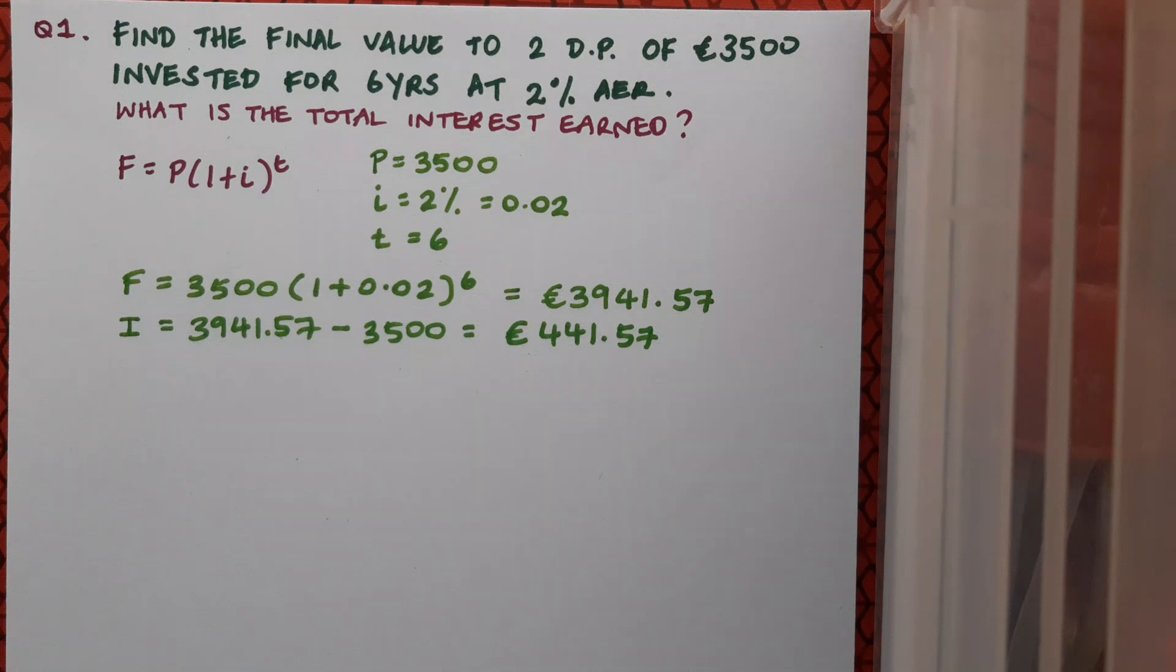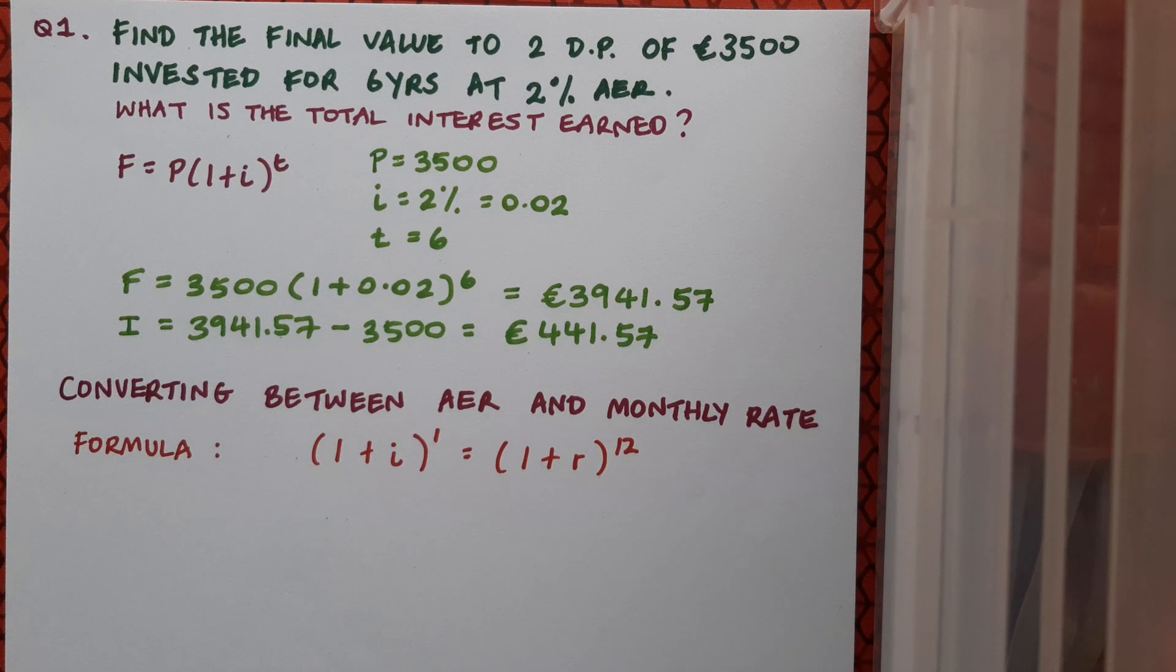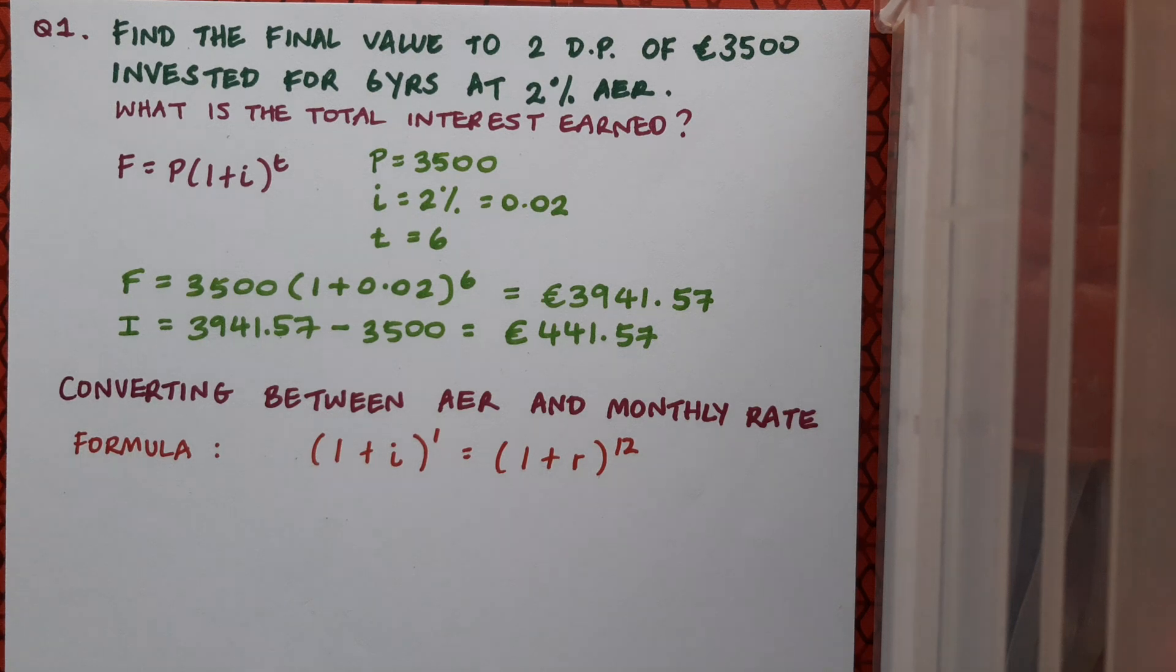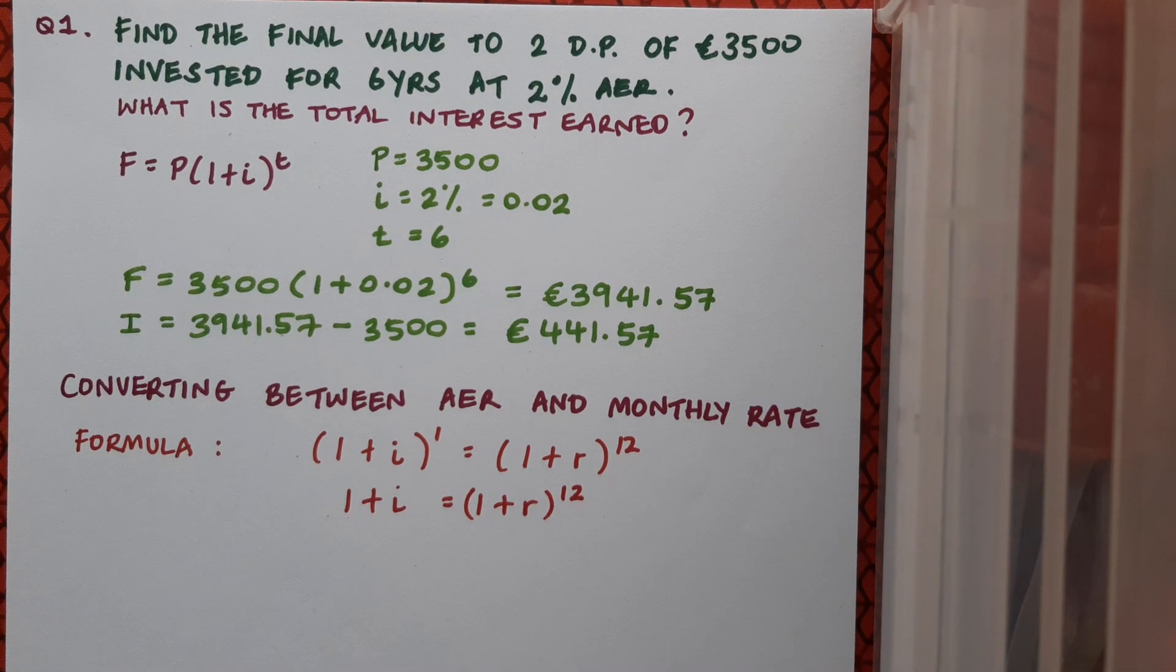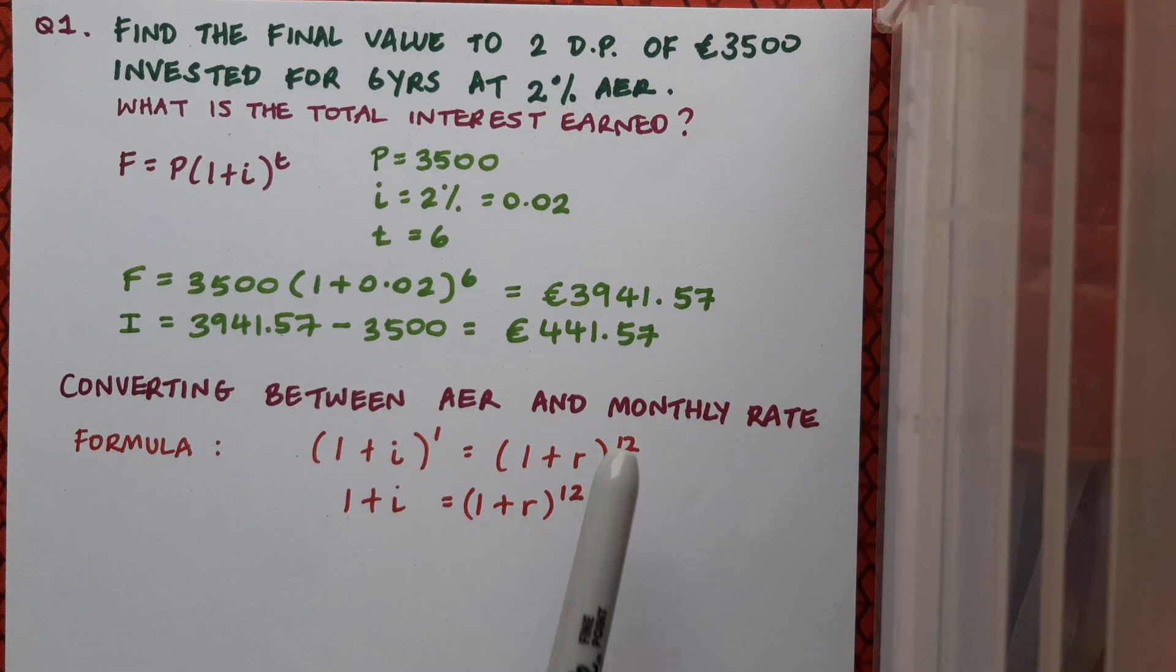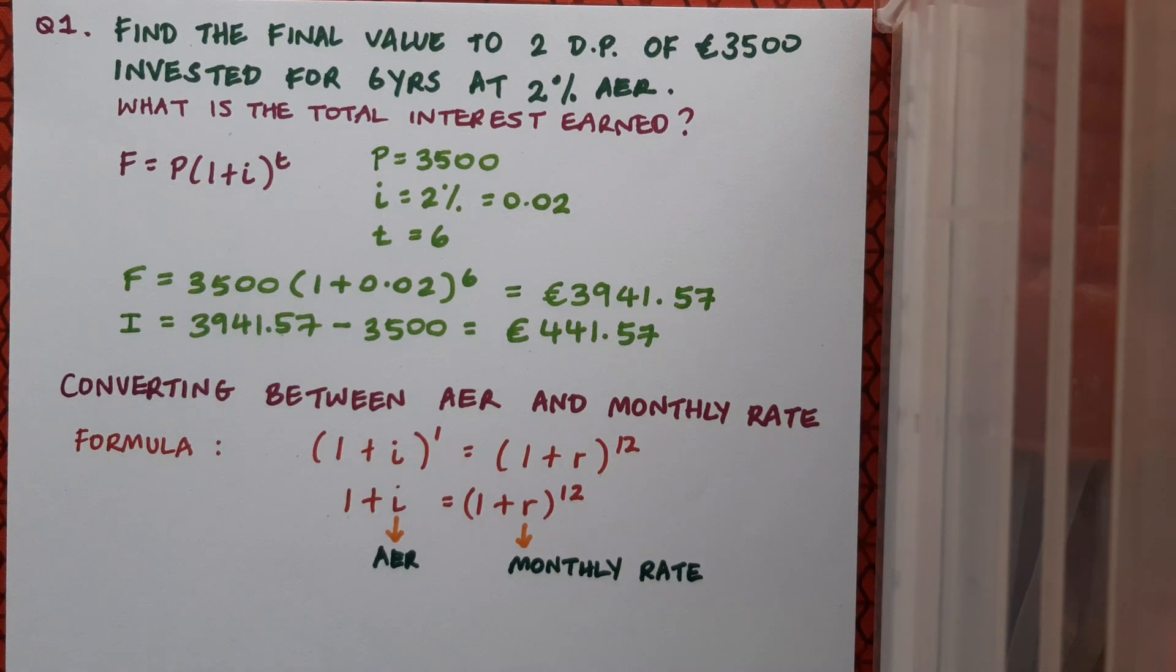Sometimes instead of giving the AER institutions give a monthly rate. So we need to be able to change back and forth between a monthly rate and a yearly rate. To do this we'll be able to use a formula. It'll be 1 plus i to the power of 1 equals 1 plus r to the power of 12. We can actually simplify this formula a little bit and write it as 1 plus i equals 1 plus r to the power of 12. Effectively what it's saying is that if I apply my yearly interest once it should be the same as applying my monthly interest 12 times. Remember that i stands for the AER, the annual rate, and r stands for the monthly rate.